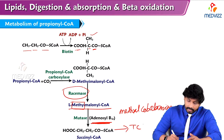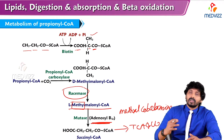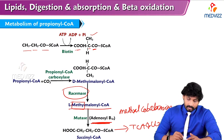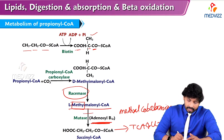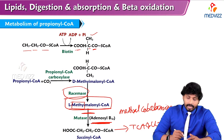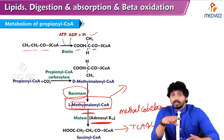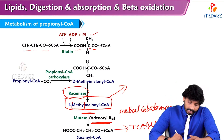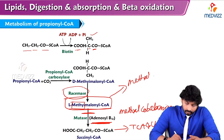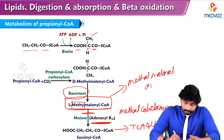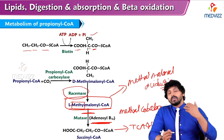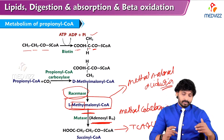Succinyl-CoA enters the TCA cycle, is converted to oxaloacetate, and is used for gluconeogenesis. In case of B12 deficiency, this reaction does not take place. There will be accumulation of methylmalonyl-CoA and it causes methylmalonic aciduria — we have discussed organic acidurias in previous videos. Through this, we can also assess vitamin B12 deficiency.